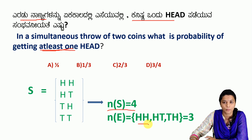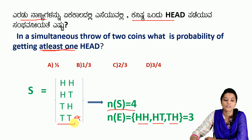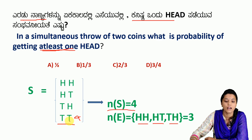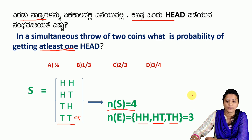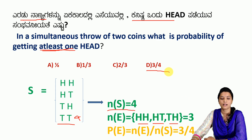At least one head means minimum one head. Head-head gives 1 head, head-tail gives 1 head, tail-head gives 1 head. Tail-tail does not give any head, so it does not satisfy the condition. So N(E) equals 3. Using the formula N(E) divided by N(S): 3 divided by 4. Option D is the right answer.